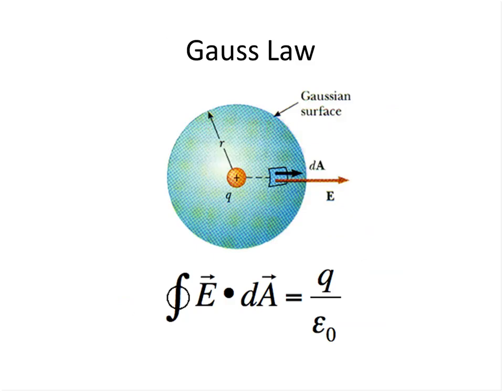Gauss's law says that if you had a surface around a charge and took the closed surface integral of the electric field over the entire surface — ∮E·dA — it equals the charge inside that surface divided by ε₀. I wanted to show this graphically so you understand what this integral means physically.